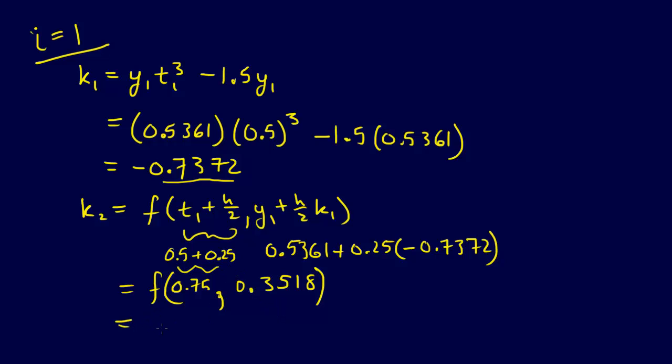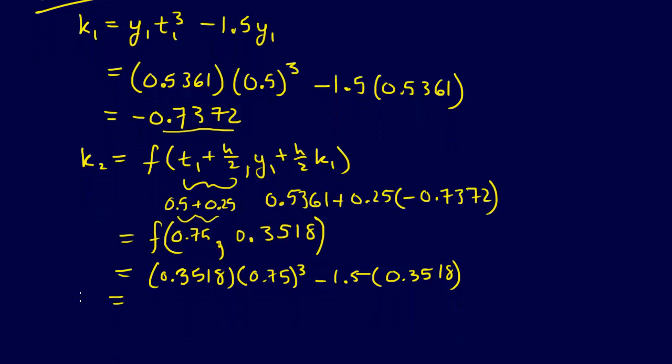And when we do that, that's equal to 0.3518 times 0.75 cubed minus 1.5 times 0.3518. And that is equal to minus 0.3793. So that's our K2.